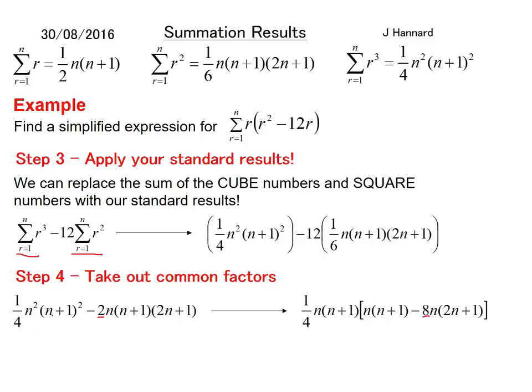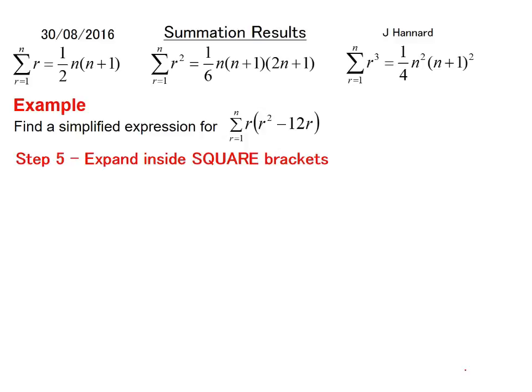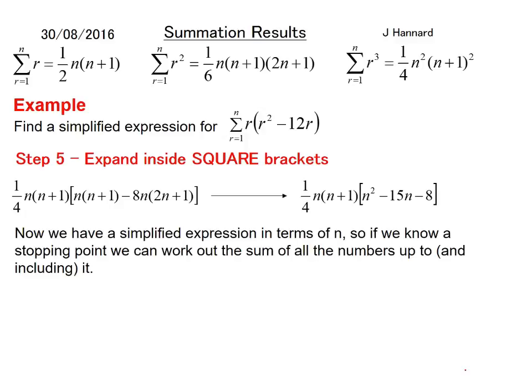The n is also a common factor, and so is the n plus 1, so we'll bring them out to the front. Left behind are n times n plus 1 minus 8 lots of 2n plus 1. And then you expand inside the square brackets just like an induction. It would usually factorize, but I don't think this one does. So we have a simplified expression in terms of n. If we know a stopping point, we can work out the sum of all the numbers up to and including it.